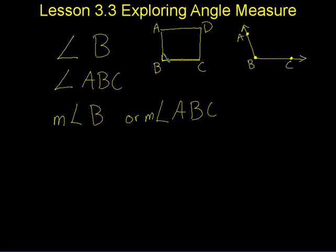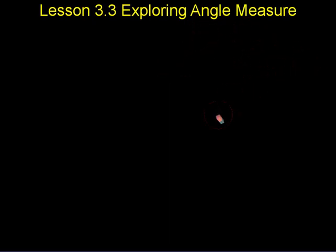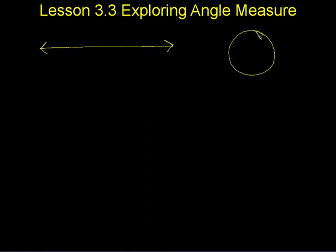So on the study link, they're going to ask you to determine what some of the angles are. In class we have talked about the different angle measures of different polygons. One thing that can help is knowing that a straight line is 180 degrees and also that a circle is 360 degrees.